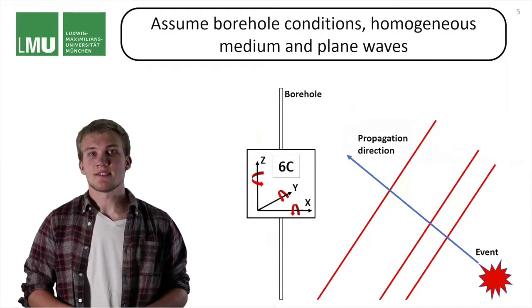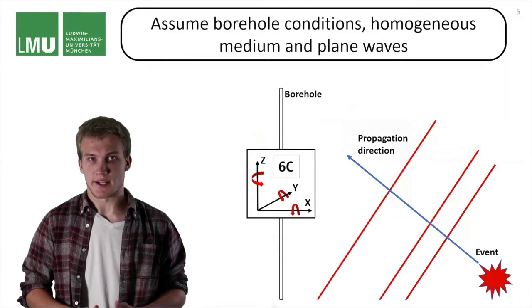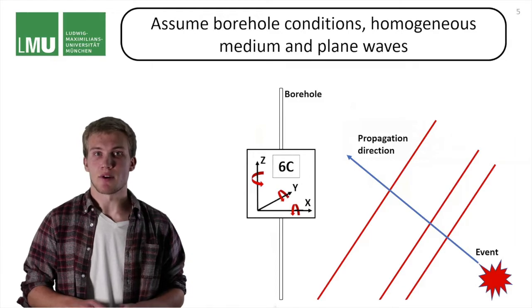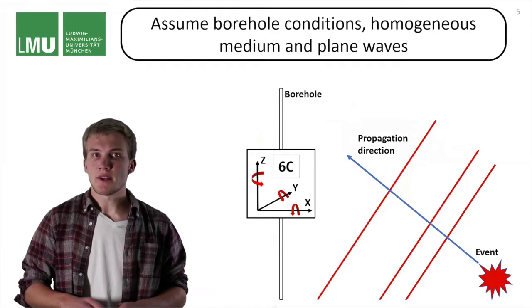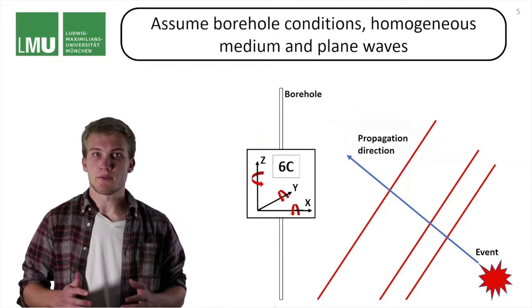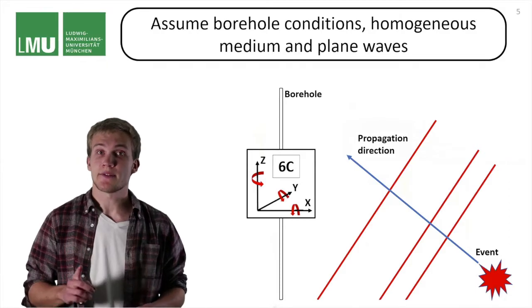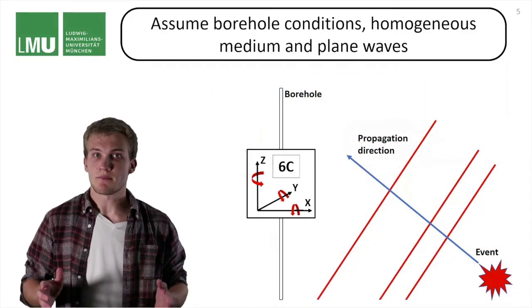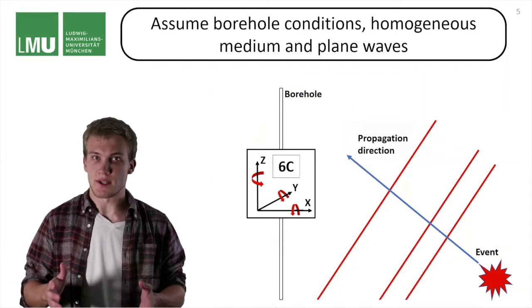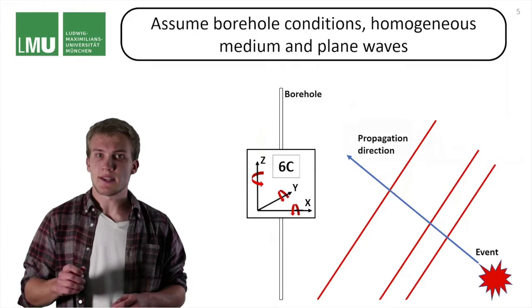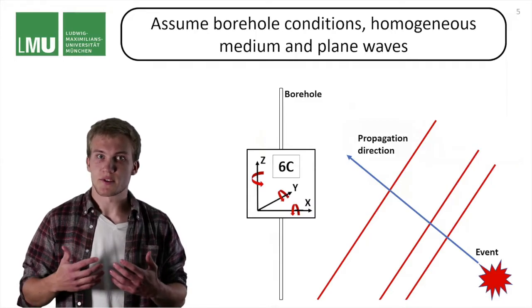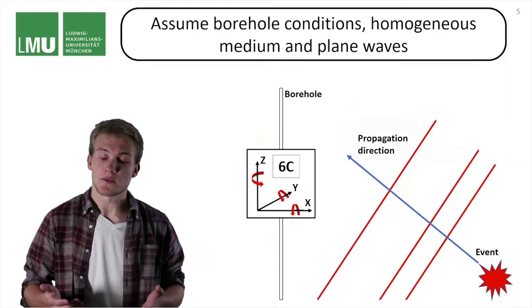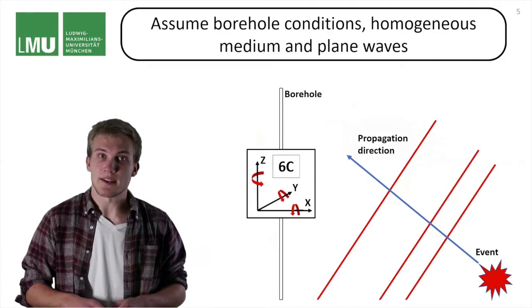Let me explain the theoretical framework we are working in. Let's place a hypothetical six component receiver inside a borehole. Let's say the medium around it is completely homogeneous, however it behaves anisotropic. We induce an event at some random position inside this medium. The energy released will produce body waves that are captured by the six component receivers, and those body waves we assume arrive at plane waves.